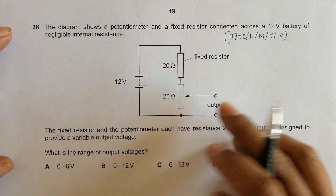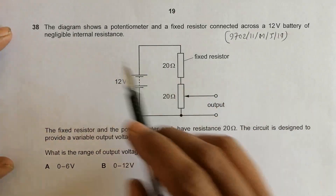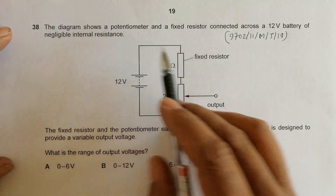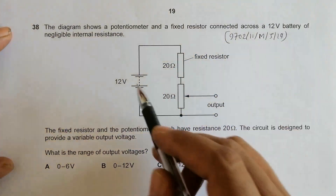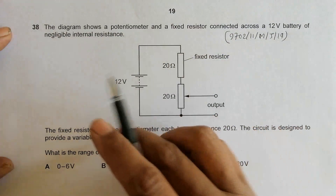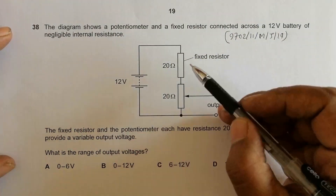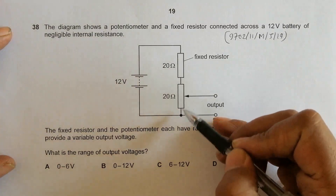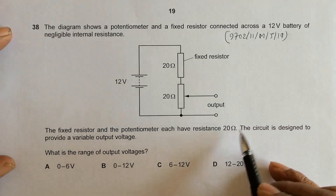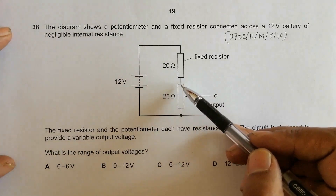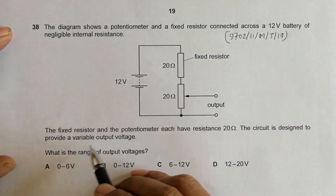It's concerned with the chapter on current electricity, question number 38. The diagram shows a potentiometer and a fixed resistor connected across a 12-volt battery of negligible internal resistance. The fixed resistor and the potentiometer each have a resistance of 20 ohms — the full resistance of the potentiometer is 20 ohms.